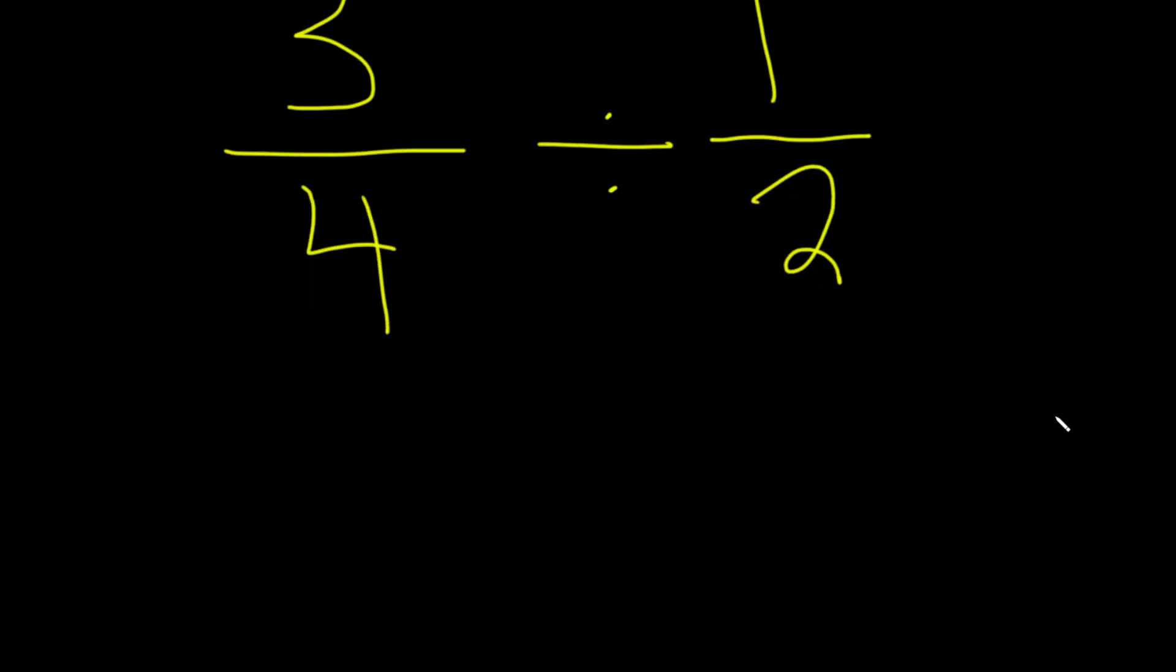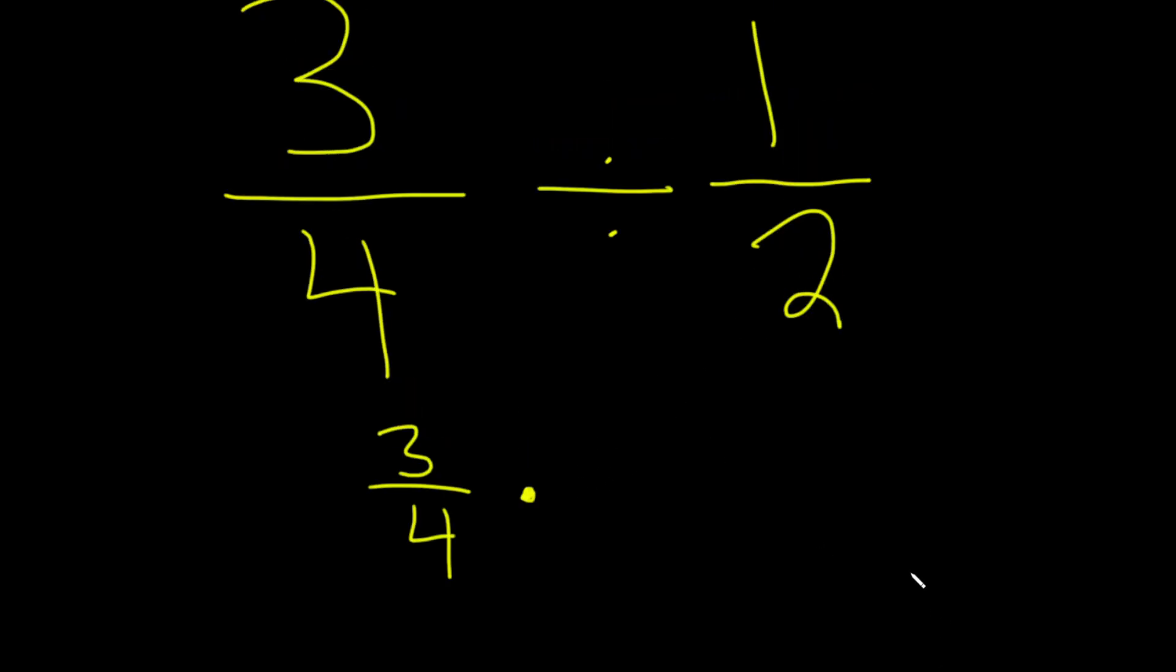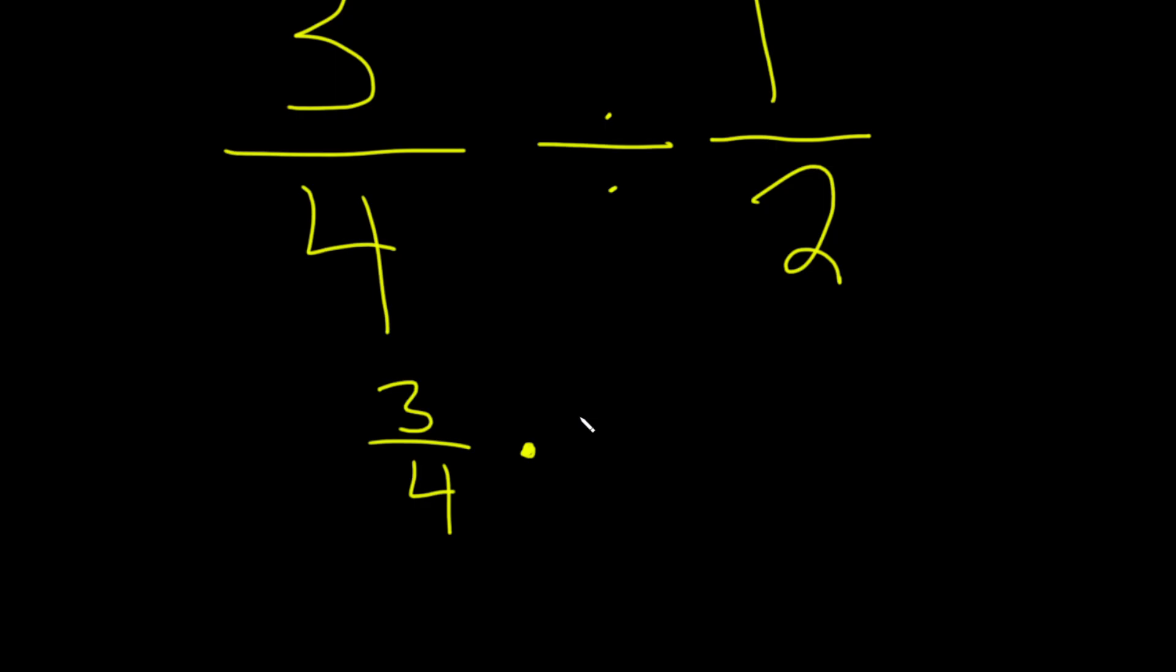So let's rewrite this. Whenever you have the division symbol, you can replace this mystical symbol with just a times, or I'll just use a dot, and then you flip this. So it's 1 over 2, so it becomes 2 over 1.